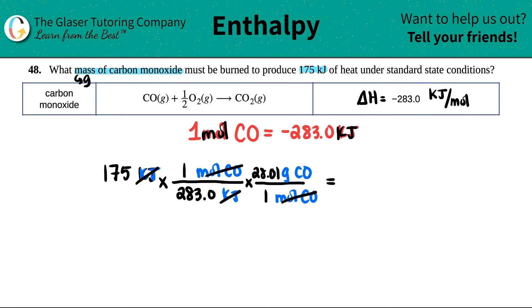Let's do this math. 175 divided by 283 times 28.01. I get roughly 17.3 grams of carbon monoxide. And that's it. So if you wanted to release 175 kilojoules of energy, you would need to have 17.3 grams of carbon monoxide being burned by combustion.